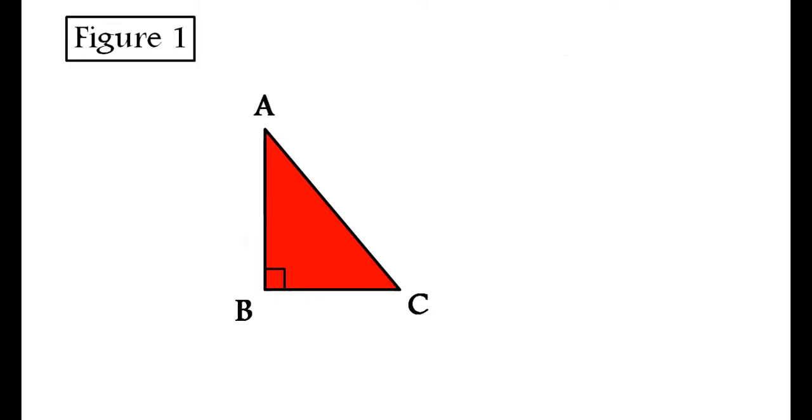Let side AB is equal to a units. Here we will consider a is equal to 4 cm, side BC is equal to b units, say 3 cm, and hypotenuse AC is equal to c units which is 5 cm.